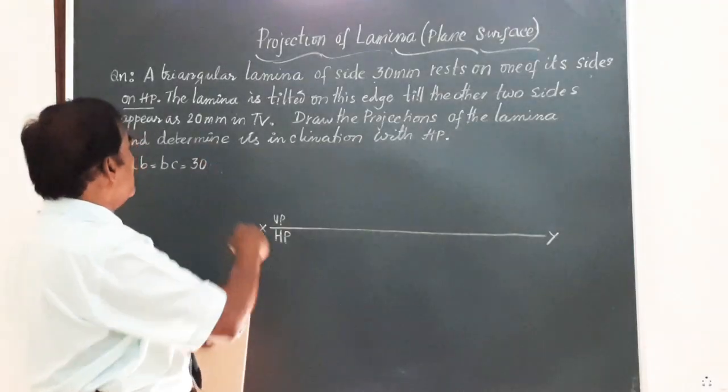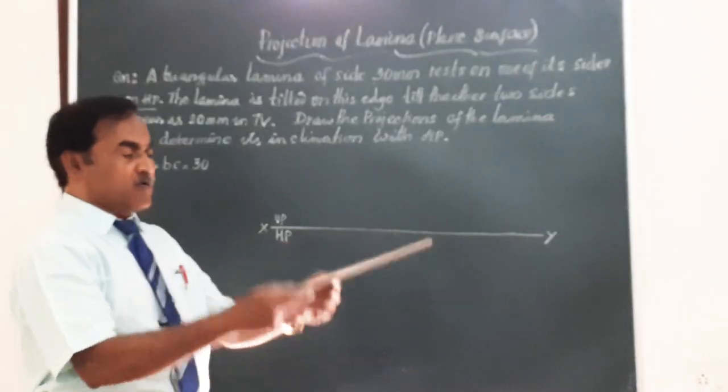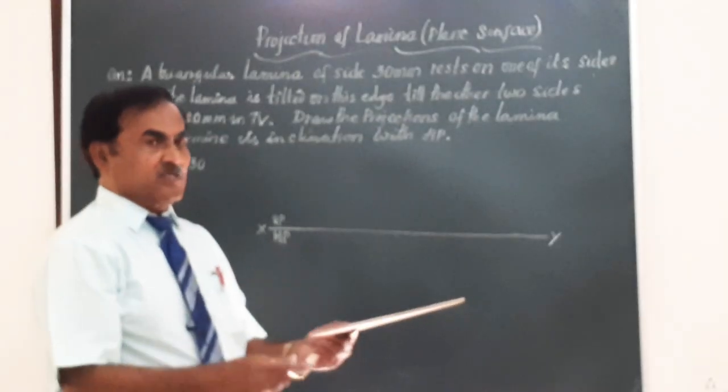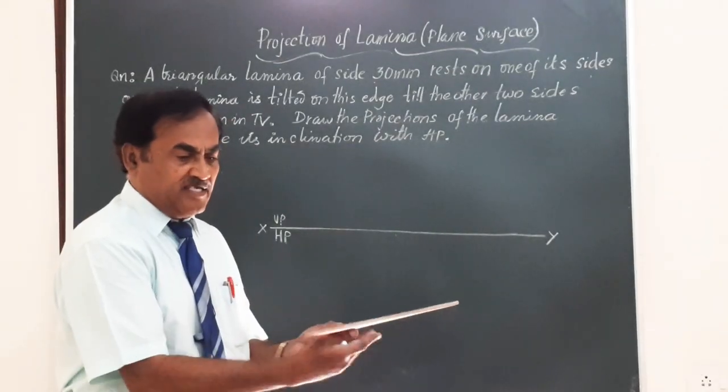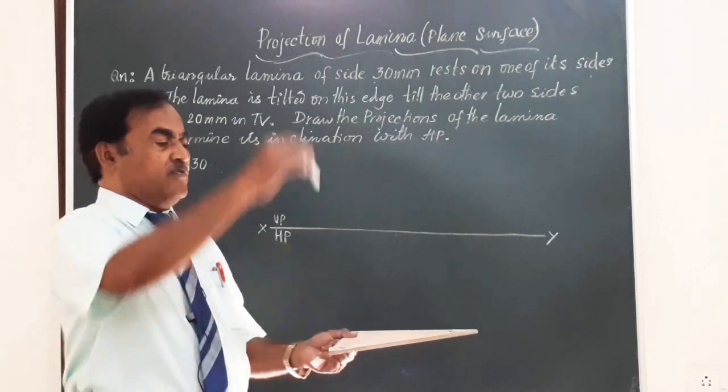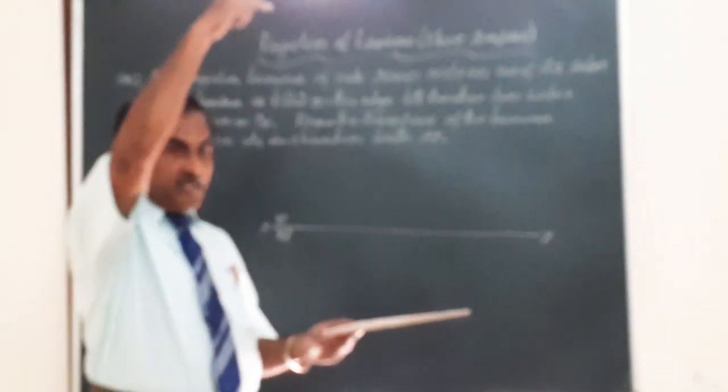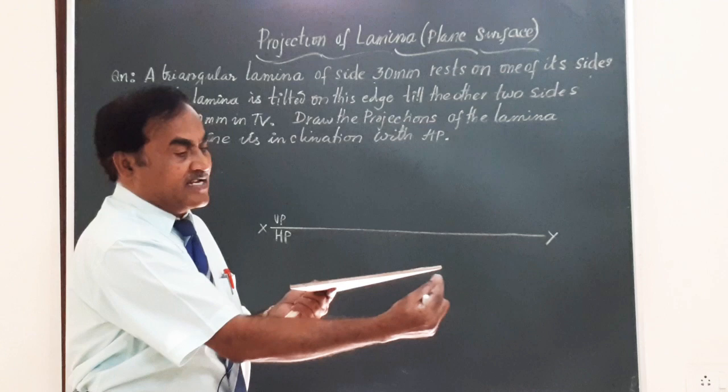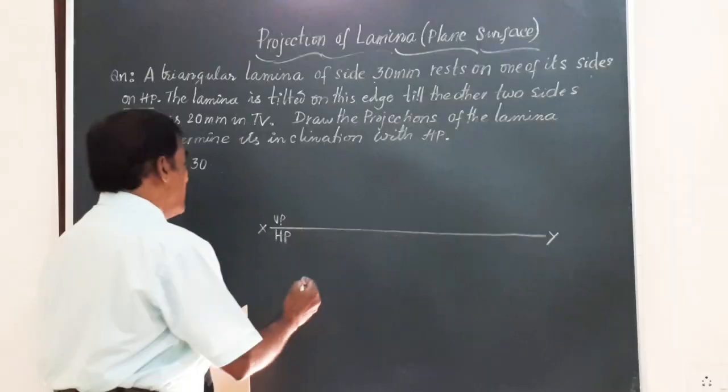Mark VP and HP indicating the first angle projection. And as per the problem, the lamina is resting on HP. So the full surface of the lamina ABC is in contact. When you look from the top, you see the equilateral triangle in the top view and a line in the front view. So we have an equilateral triangle ABC measuring 30 mm each side.